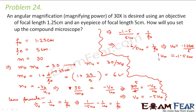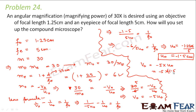So the object should be placed at a distance of 1.5 cm from the objective. The image formed by the objective will be at VO = −5 × (−1.5) = 7.5 centimetres. These values of UO and VO together describe the complete setup of the compound microscope required to achieve the desired magnification of 30×.